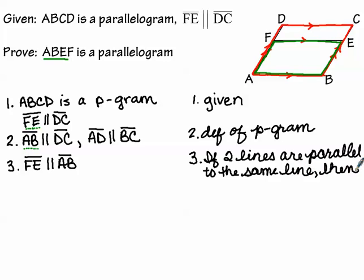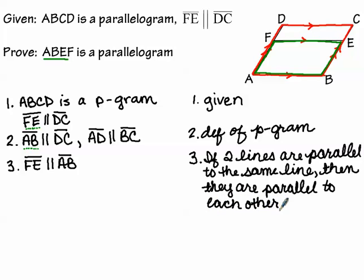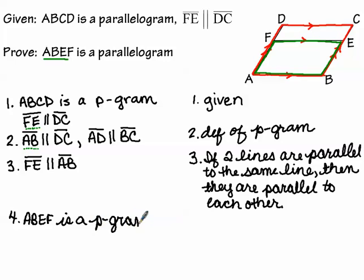Segment FE is parallel to segment DC — if two lines are parallel to the same line, then they are parallel to each other. At this point we've shown that both pairs of opposite sides in the green quadrilateral ABEF are parallel, which means ABEF must be a parallelogram by the definition of a parallelogram: it has two pairs of opposite sides that are parallel.